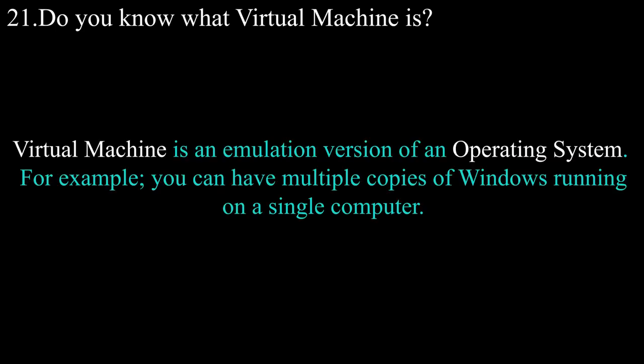Question number twenty-one: do you know what a virtual machine is? A virtual machine is an emulation version of an operating system. For example, you can have multiple copies of Windows running on a single computer.